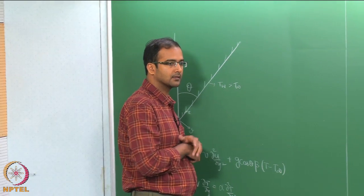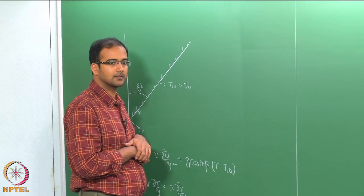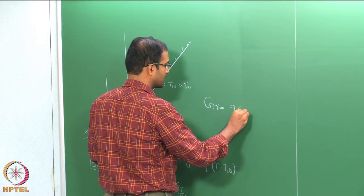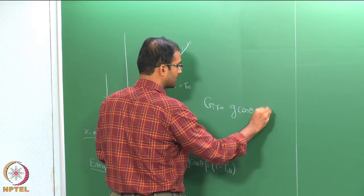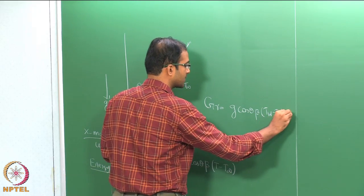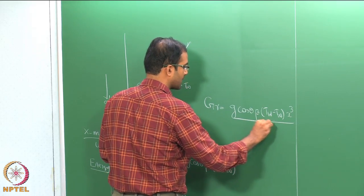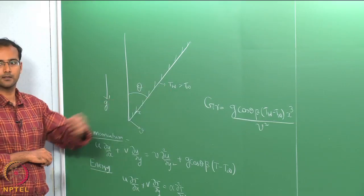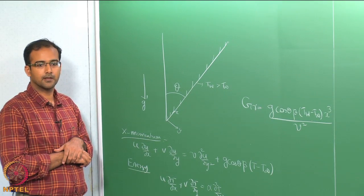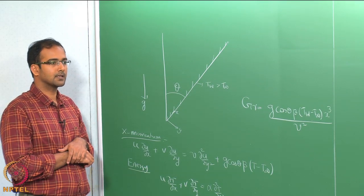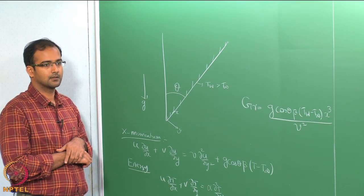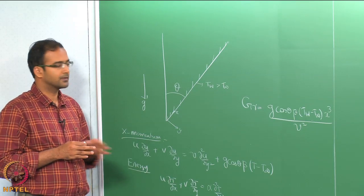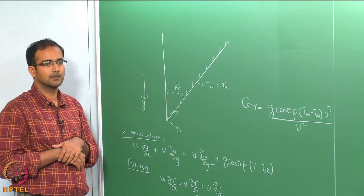We can use the same solution as for the vertical flat plate, only redefining the Grashof number. We include g·cos(theta) into the definition: Gr = g·cos(theta)·beta·(T_wall - T_infinity)·x³/nu². So we include the inclination angle cos(theta) directly into the Grashof number definition, meaning whatever solution — similarity or approximate — is still valid for this case with that slight modification.